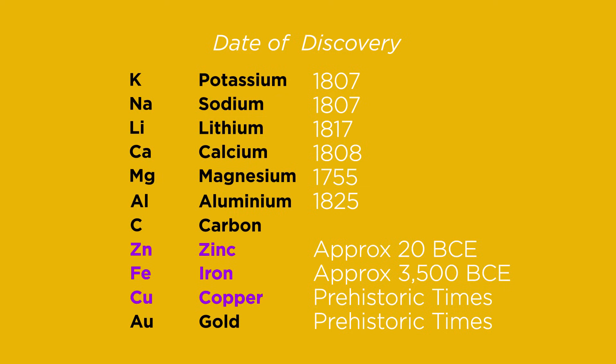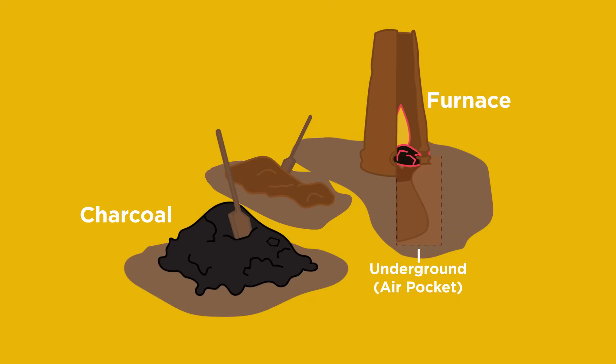This is because to isolate these metals from their compounds found in ores, ancient people used charcoal, almost pure carbon, in a fire or furnace to displace these low reactivity metals. This displacement reaction is known as smelting.